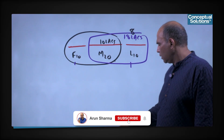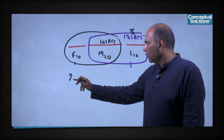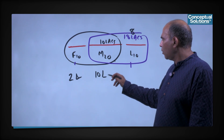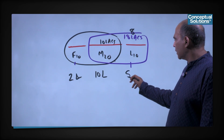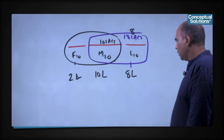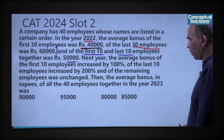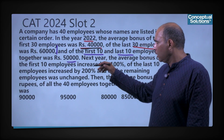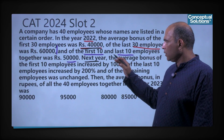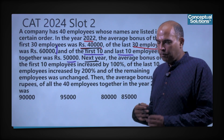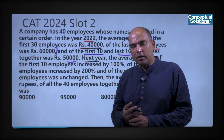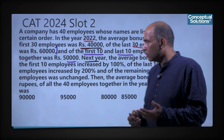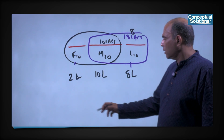To summarize cleanly: in 2022, the bonus component for the first 10 employees is 2 lakhs, for the middle 20 employees is 10 lakhs, and for the last 10 employees is 8 lakhs. Going back to the question for more information: in the next year, the average bonus of the first 10 employees increased by 100 percent. Since the number of employees is the same and the average doubles, the total bonus also doubles — so this means the first 10's total goes from 2 lakhs to 4 lakhs.